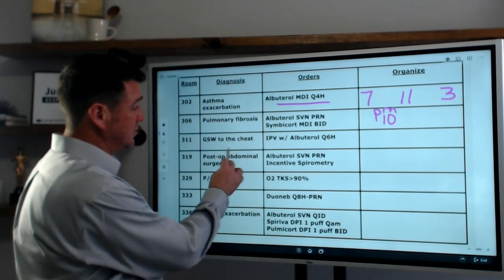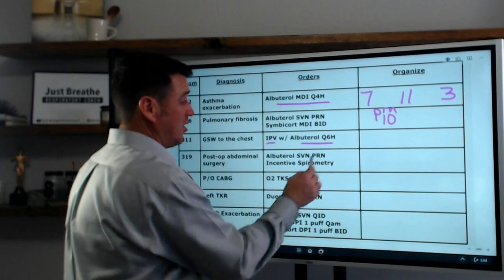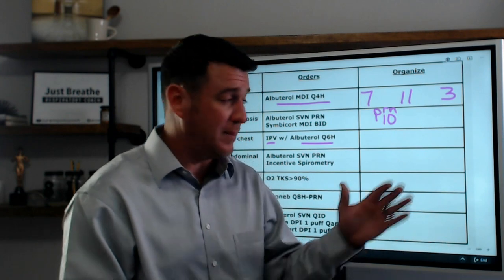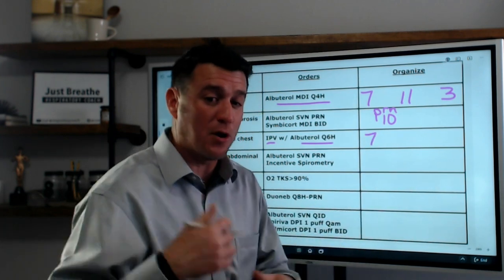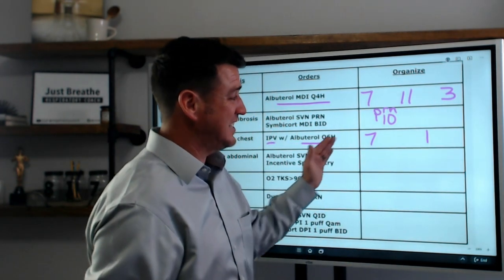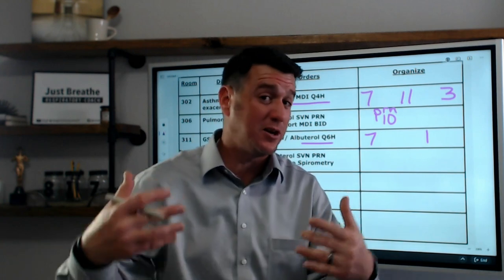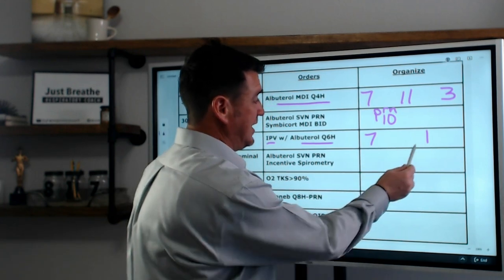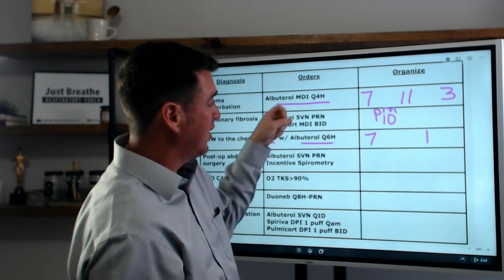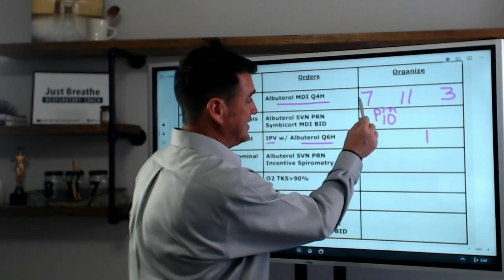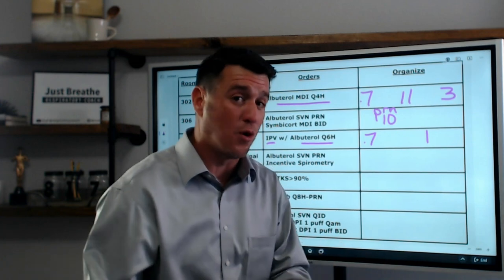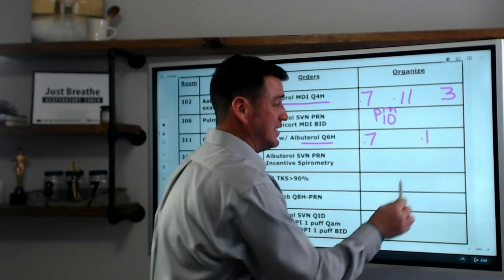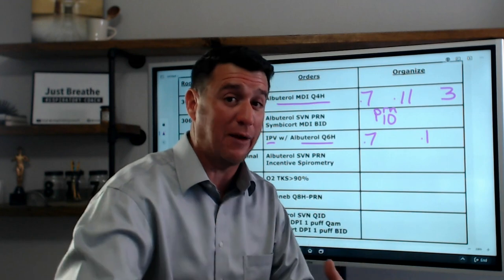The next patient has a gunshot wound to the chest with IPV with albuterol Q6. Q6 means six hours apart, so I'll see them in the morning and then in the early afternoon. If I see them at 7, then six hours later is 1. If I don't see them until 8, then I'm probably not seeing them again until 2. So right here I'm putting seven and one.